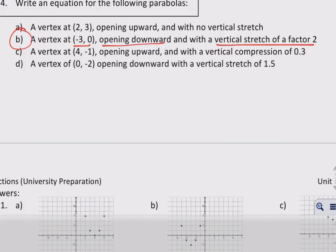So remember, your vertex form is going to be y equals a x minus h squared plus k. So the vertex we know, it's negative 3 comma 0, so I can plug those points in immediately.